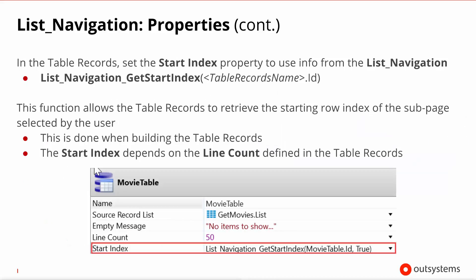From all this, it becomes clear that the table records needs to obey the navigator regarding what is the first index of the source list that should be shown for whatever page is selected. We achieve this by dynamically setting the start index property, as shown in the screenshot.